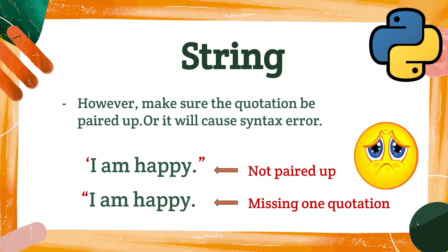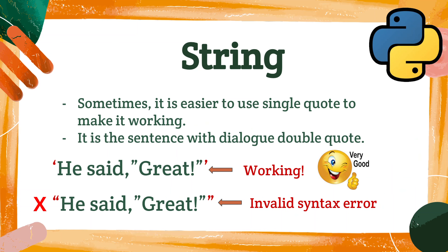So if you want to print out 'I am happy', you can use single quotes or double quotes to print it out. Even though Python is not as strict as other languages, you still need to make sure the quotations are paired up. For the first example, the first single quotation is not paired up with the ending quotation. For the second example, the ending quotation is missing. So these two examples will cause syntax errors.